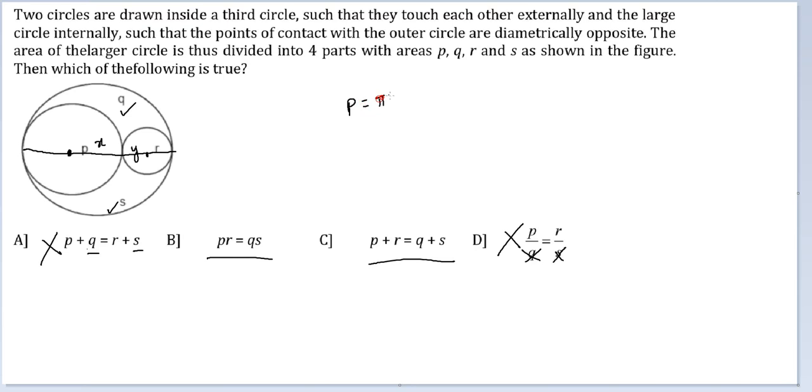So if I take the radius of this circle P as X and this circle R as Y, area P will be equal to pi X squared and R will be equal to pi Y squared.